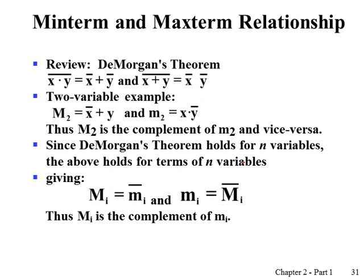We can find the relationship between minterms and maxterms. They are complements of each other. What it means is that if you complement a minterm, you will get the corresponding maxterm. Similarly, if you complement a maxterm, you will get the corresponding minterm. So minterms and maxterms are complements of each other.